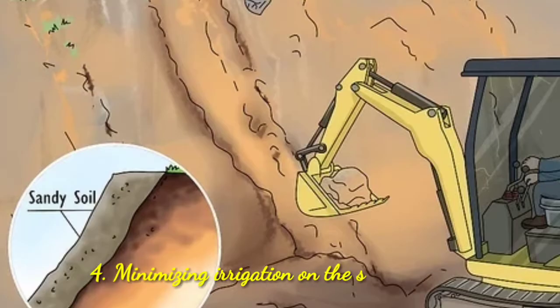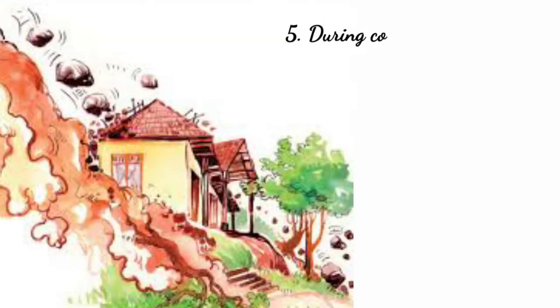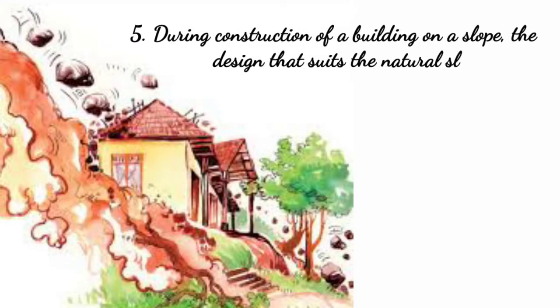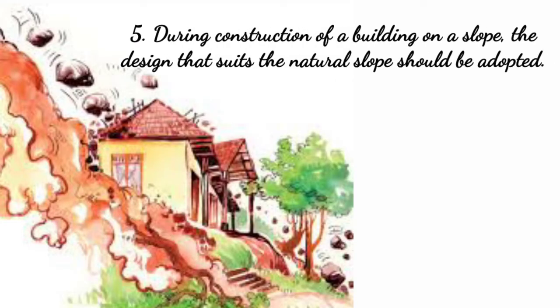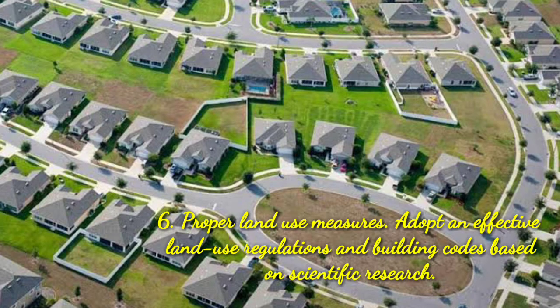Number 4: Minimize irrigation on the surface of the soil. Number 5: During construction of a building on a slope, the design that suits the natural slope should be adopted. Number 6: Proper land use measures — adapt effective land use regulations and building codes based on scientific research.